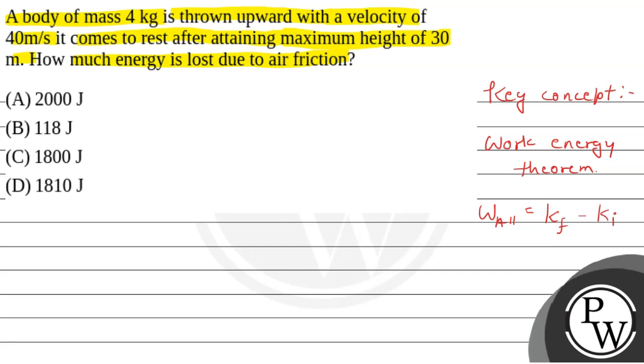Here we have a body of mass 4 kg, which is thrown upward with a velocity of 40 m per second. There is a downward force, which is mg, where m is the mass of the object, and g is the gravitational acceleration. And the air friction force will be in the downward direction, opposite to the velocity.